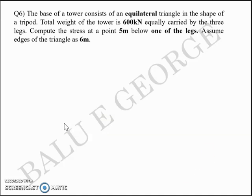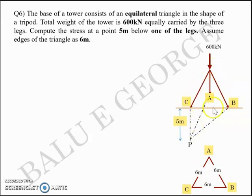You have an equilateral triangle in plan: A, B, C, the three legs. Each side is 6m. It's a tripod in elevation with A, B and C, total weight 600kN equally carried by three legs. Each leg transfers 200kN at the point where it contacts the ground. You are asked to compute the vertical stress at point P, 5m below one of the legs. Let's take that leg as C. Point P is 5m below C.